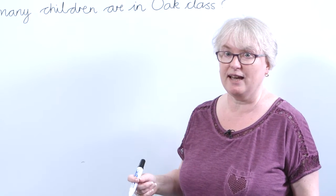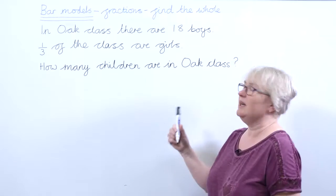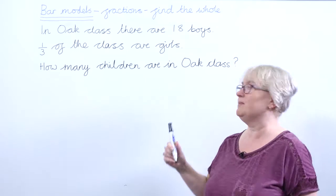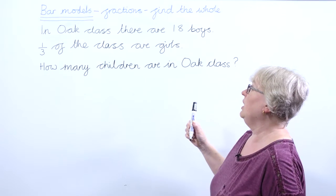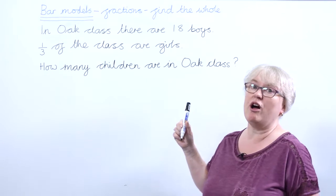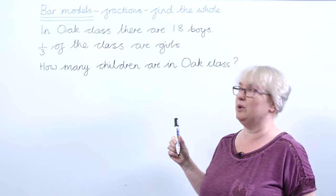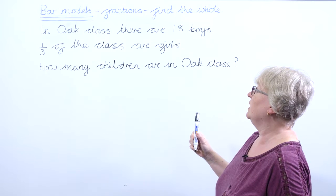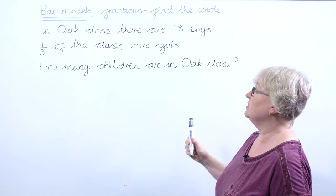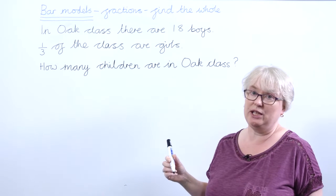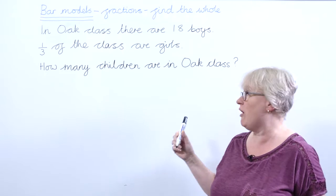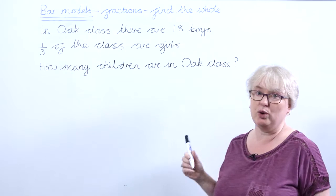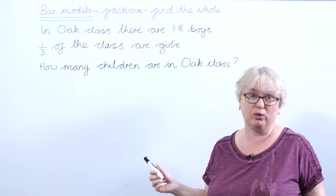Let's have a look at the question. It says: in Oak class there are 18 boys. One third of the class are girls. How many children are there in Oak class altogether?